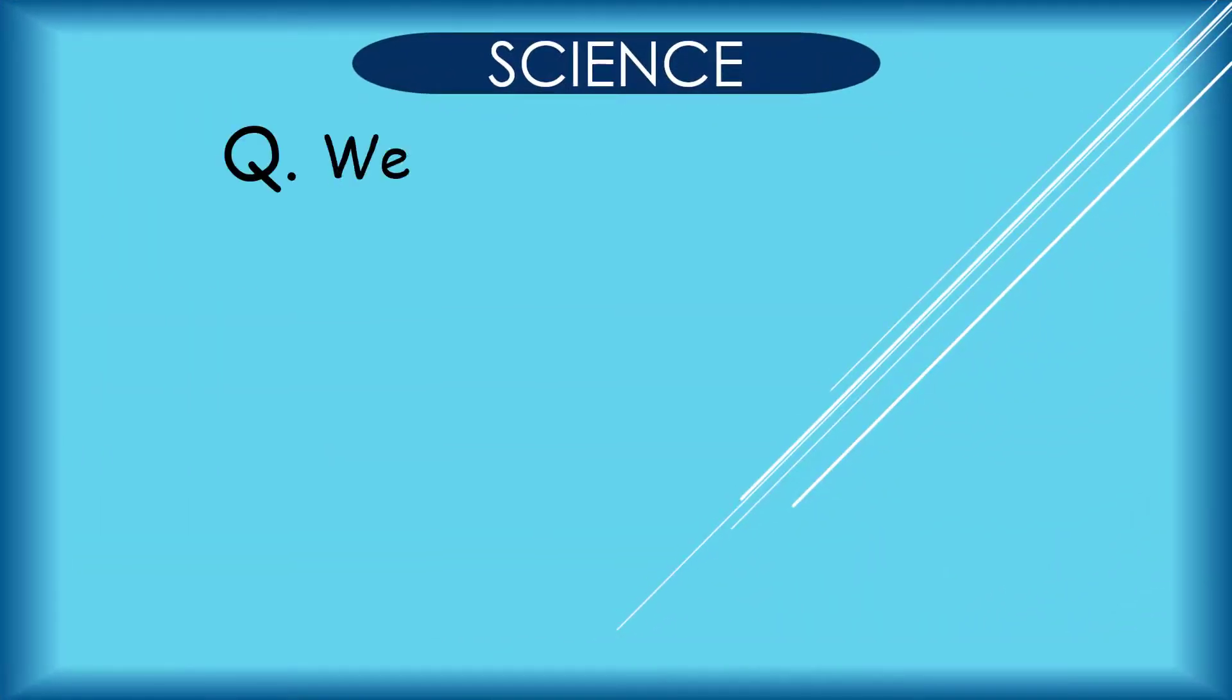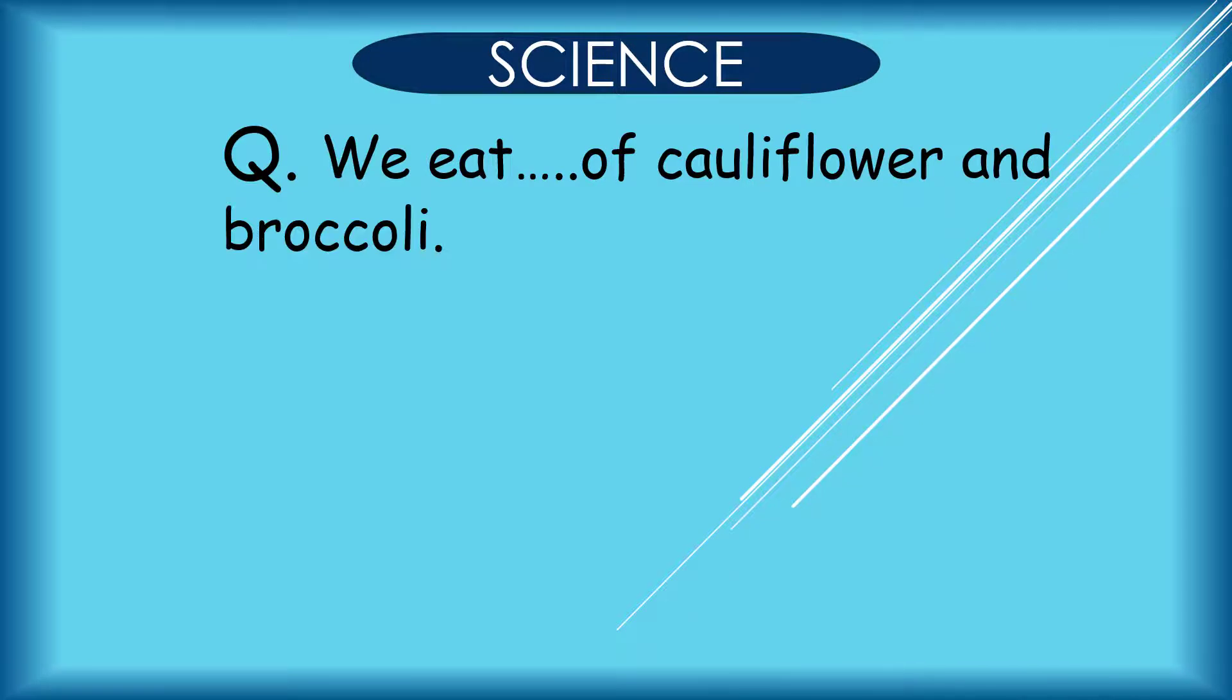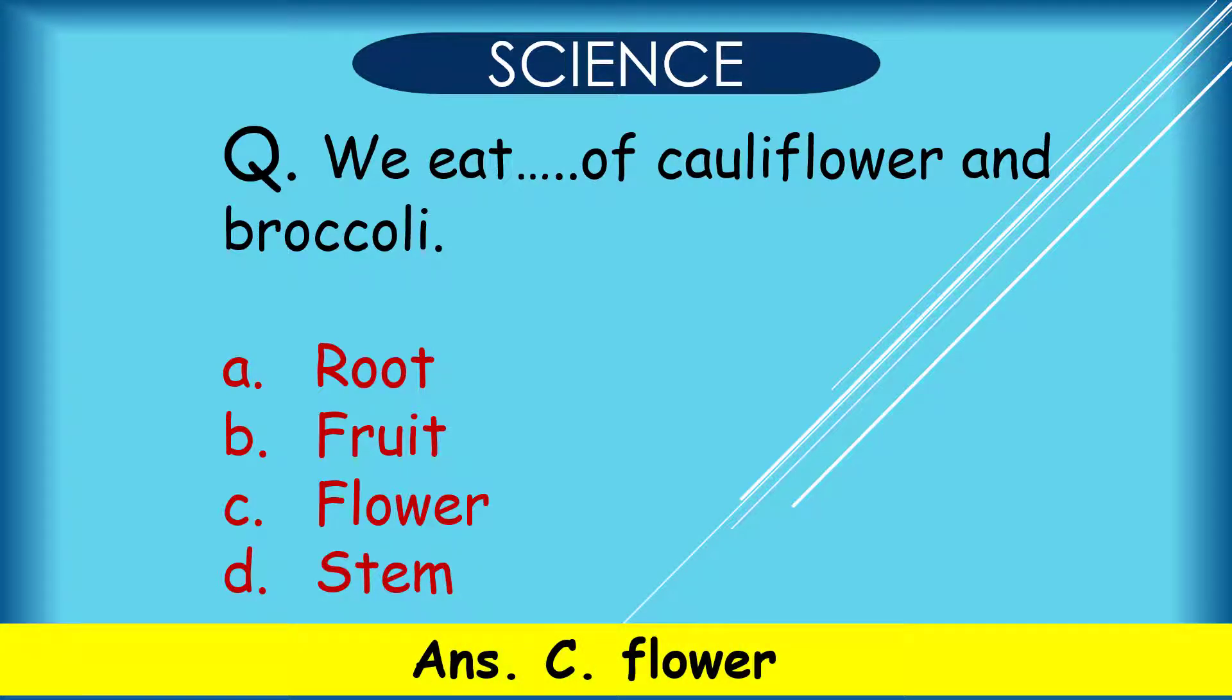Question: We eat dash of cauliflower and broccoli. A. Root, B. Fruit, C. Flower, D. Stem. Correct answer is C. Flower.